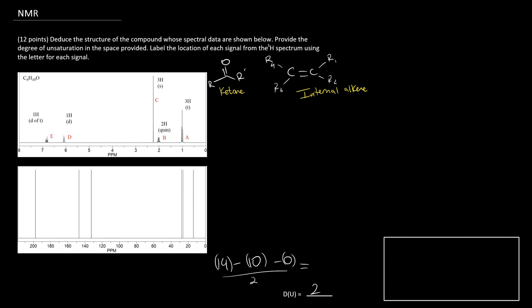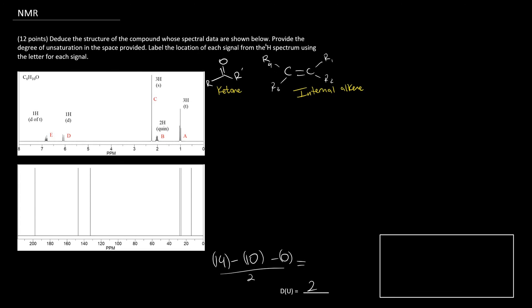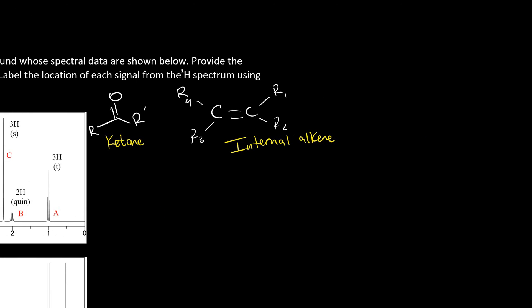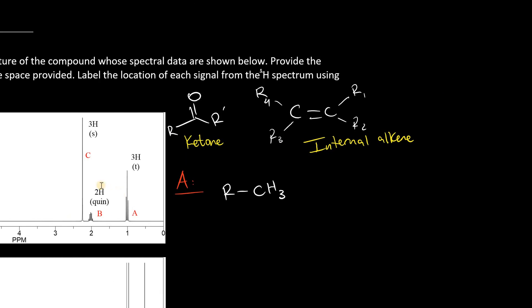So now let's try to decipher all the signals A through E, because eventually, we do need to label the location of each of them. So signal A is a triplet 3H. So that's a methyl group.